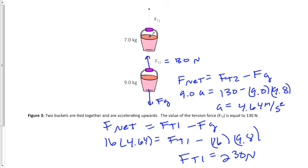And likewise, there's about 160 newtons between both of these buckets, and force tension 1 not only has to hold the weight of about 160 newtons, but it also must accelerate it upwards at 4.64 meters per second squared. And that's why the tension values are greater than just simply gravity force.